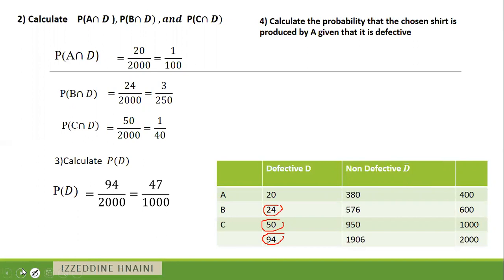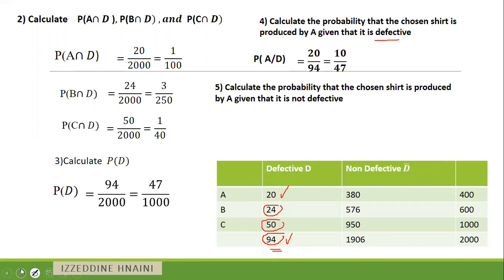Calculate the probability that the chosen shirt is produced by A, given that it is defective. We want to find P(A|D). The condition is that the item is defective, so the total number of defective items is 94. Out of these 94 items, 20 are from A. So, P(A|D) = 20/94. Next, calculate P(A|D̄): the total number of non-defective items is 1906, and 380 are from A. So, the answer is 380/1906 = 190/953.